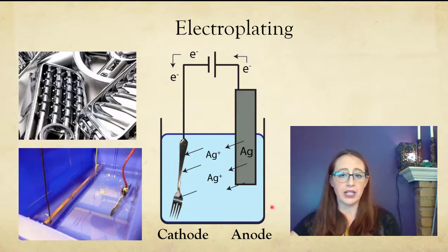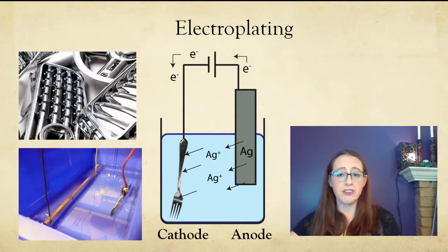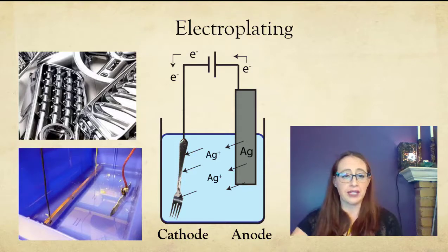So in this example here, we have silver metal being oxidized from this bar of silver. It goes into the solution, and then it's being plated out on the cathode. The thickness of the plating can be varied by changing the voltage or the time that's used to plate it. And we're going to talk about that right now.